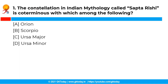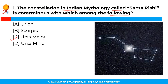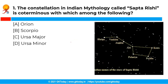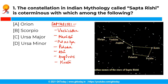The first question is: the constellation in Indian mythology called Sapta Rishi is coterminus with which among the following? The correct answer is Option C, i.e. Ursa Major. In ancient Indian astronomy, the Asterism of the Big Dipper, which is a part of the constellation of Ursa Major, is called Sapta Rishi. It has seven stars representing seven rishis namely Vashishth, Marichi, Pulastya, Pulaha, Atiri, Angiras, and Kratu.